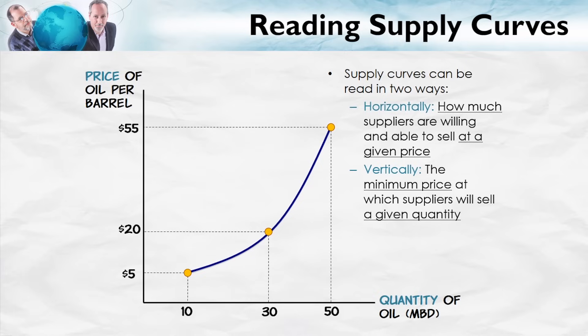The vertical reading tells us the minimum price at which suppliers will sell a given quantity. For example, for the 50 millionth barrel of oil, suppliers are willing and able to sell that barrel for $55. The vertical reading tells us the minimum price at which suppliers will sell a given quantity. Sometimes the horizontal reading is a little bit easier, other times the vertical reading is easier, so it's important that you be comfortable reading the supply curve in both ways.